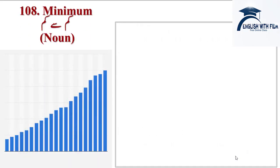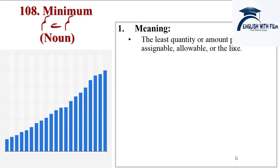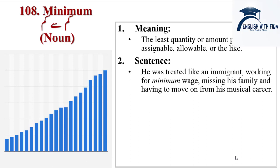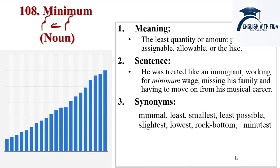Next word is minimum. It's also a noun. Meanings are the least quantity or amount possible, assignable, allowable, or the like. Sentence: he was treated like an immigrant working for minimum wage, missing his family and having to move on from his musical career. Synonyms are minimal, least, smallest, least possible, slightest, lowest, rock bottom, minutest. Antonyms are largest, maximum, most. Next word is maim.